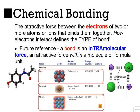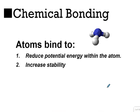We'll look at it as electrostatic force between ions in an ionic compound, between atoms in a covalent compound, and in a different way, the interaction between atoms in metals. Atoms bind for two simple reasons: number one, to reduce potential energies within the atom; and number two, to increase stability of the molecule or whatever structure it is.